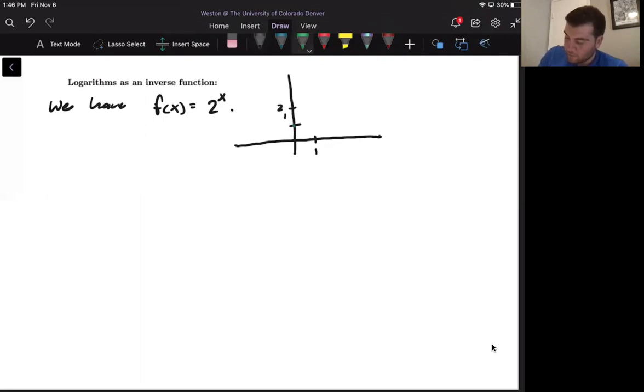So we get a dot there, a dot there. Then it sort of shoots up pretty rapidly. Okay, so one thing to notice is that this function passes the horizontal line test. And that means that it has an inverse function.